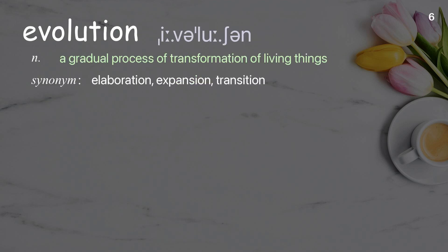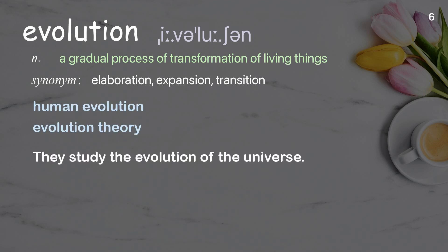Evolution: a gradual process of transformation of living things. Examples: human evolution, evolution theory. They study the evolution of the universe.